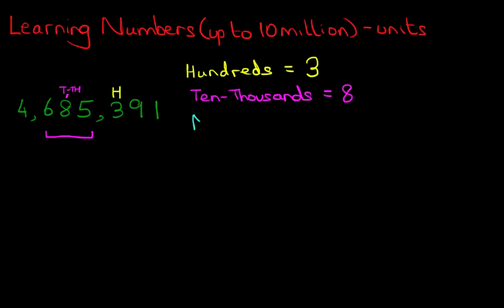Suppose the question asks: how many millions are there in this number? The millions come after two commas. We've got one comma here and another comma over here, so this must be the millions. There are four millions.